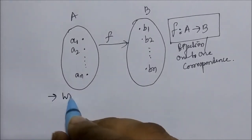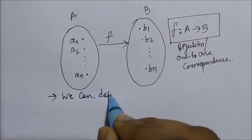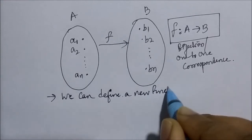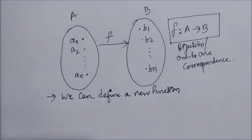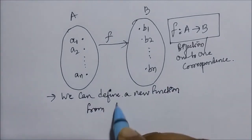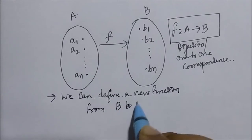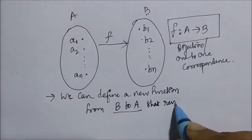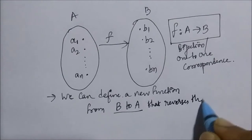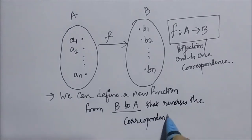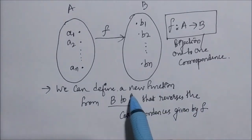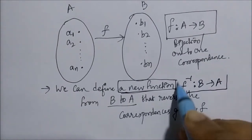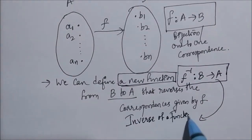In this case, we can define a new function from set B to set A that reverses the correspondence given by f. That new function is nothing but the inverse of a function, written as f inverse from set B to set A.